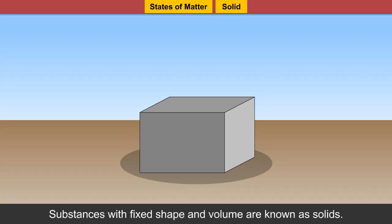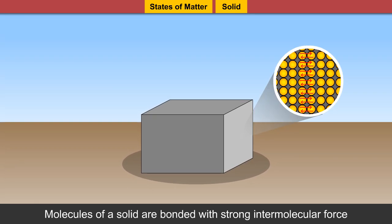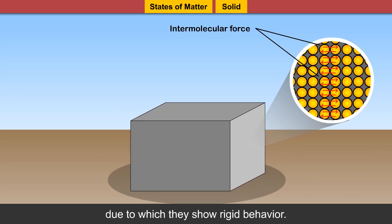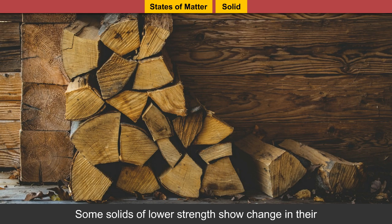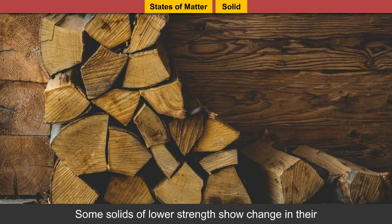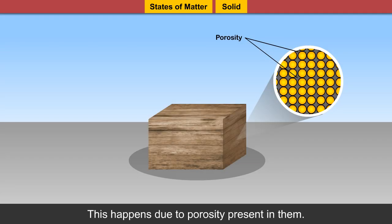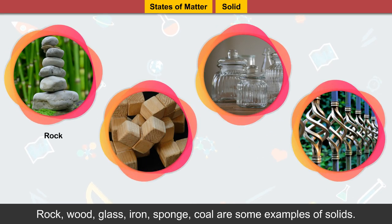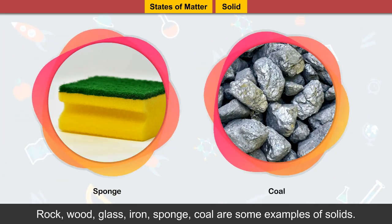Substances with fixed shape and volume are known as solids. Molecules of a solid are bonded with strong intermolecular force due to which they show rigid behavior. Solids are incompressible in nature and they occupy definite space. Some solids of lower strength show change in their original shape on application of force. This happens due to porosity present in them. Some solids may get squeezed too. Rock, wood, glass, iron, sponge, coal are some examples of solids.